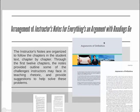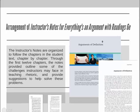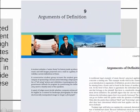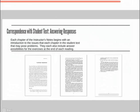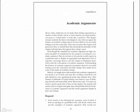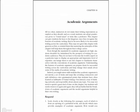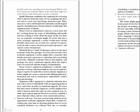The instructor's notes for Everything's an Argument with Readings, 6th edition, is arranged to follow the chapters in the main text, chapter by chapter. Through the first 12 chapters, or the rhetoric chapters, the notes provided will outline some of the challenges instructors may face in teaching rhetoric. These notes include suggestions for solutions to these problems, expansion on chapter exercises, and ideas to enrich these exercises beyond the text.